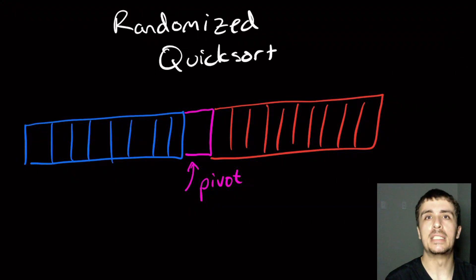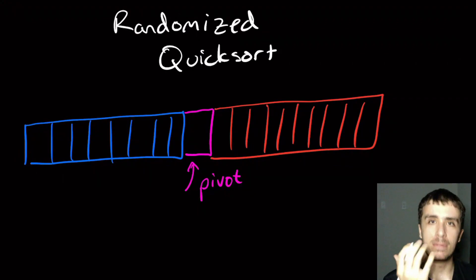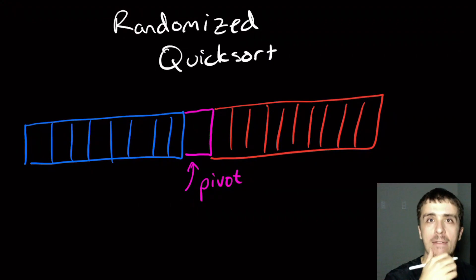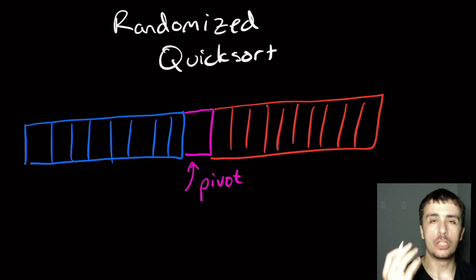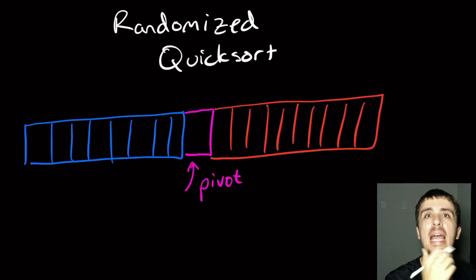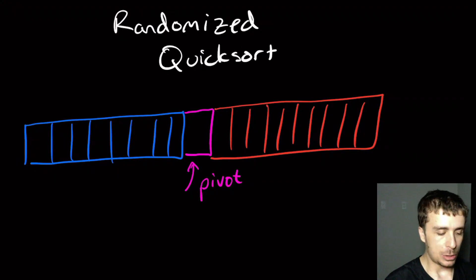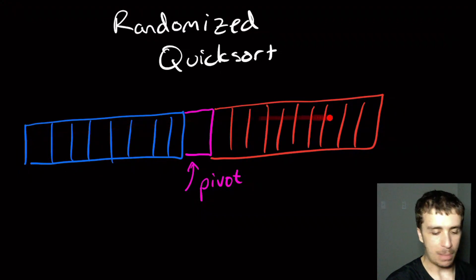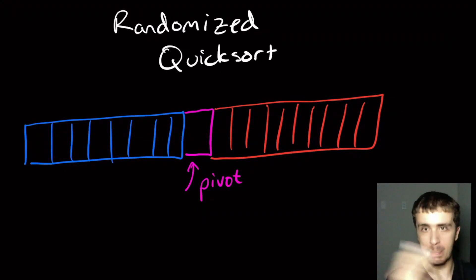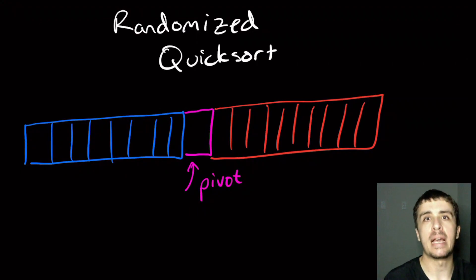The problem is: how do we actually pick the pivot? There are ways to do this efficiently, such as the median-finding algorithm we've covered on the channel before. But I want to present a really easy way to randomize the algorithm by simply choosing a random pivot — instead of always picking the first element, we pick a random element from the entire array, uniformly at random.